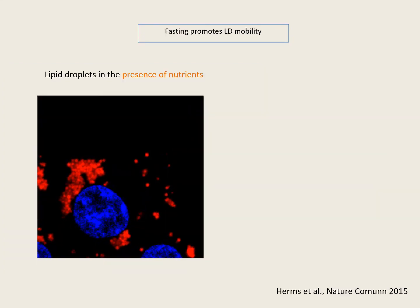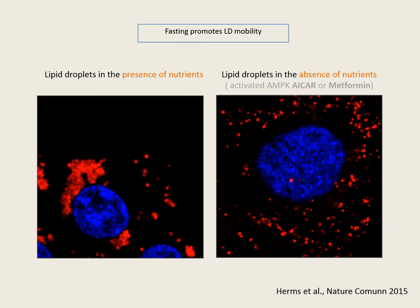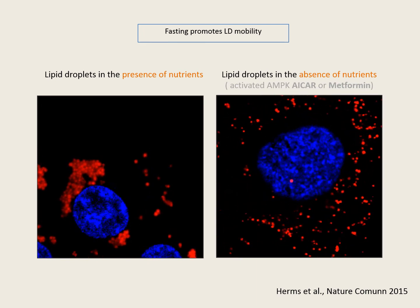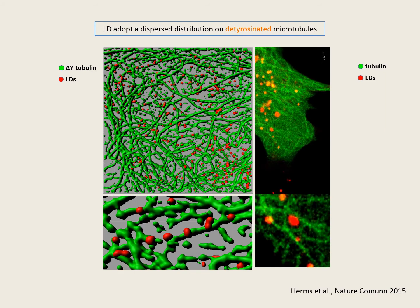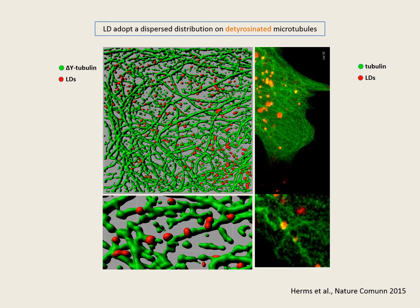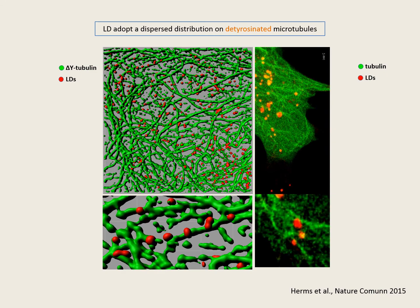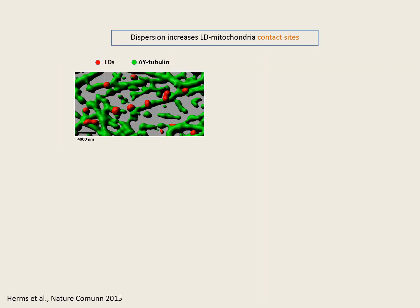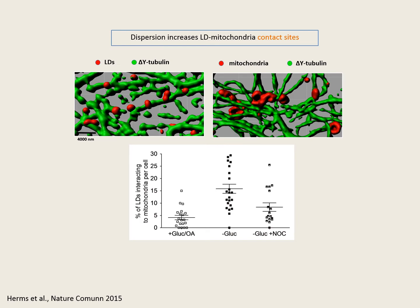We realized that nutrient conditions determine the mobility and location of lipid droplets, here in red. In the presence of glucose and fatty acids, lipid droplets are quite immobile and packed in the perinuclear region of the cell. However, when nutrients are depleted, lipid droplets become very motile and adopt a dispersed distribution within the cell. This dispersed distribution is dependent on microtubules. During starvation, lipid droplets are recruited to a specific type of microtubules, the detyrosinated microtubules, which facilitates interaction with mitochondria, also located at the same type of microtubules, increasing the number of contacts.